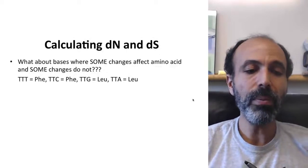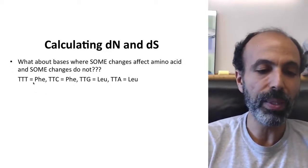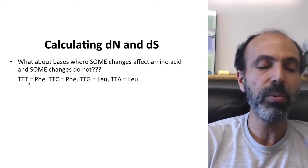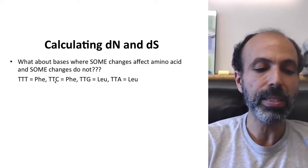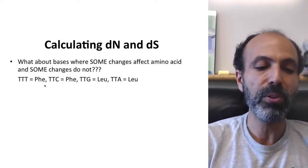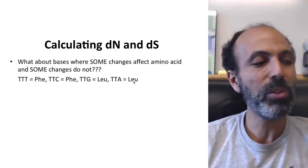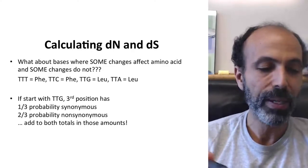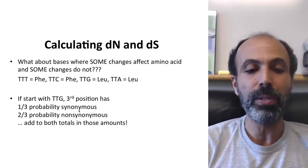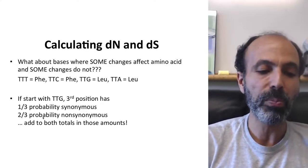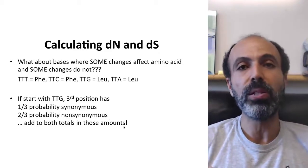Now you may be wondering, what about bases where some changes affect amino acids and some changes don't? So one example would be like this one, TTT. If you started with a TTT, which is a phenylalanine, you could change from TTT to TTC, and that's still phenylalanine, but if you change that third nucleotide to a G or an A, it becomes a leucine. So that's a little bit trickier how you deal with those, but it's not so bad. Essentially what you do is if you're starting with TTG, your third position has a one-third probability of being synonymous, and a two-thirds probability of changing to a non-synonymous.